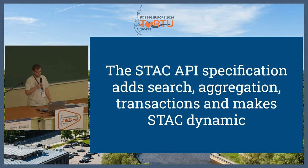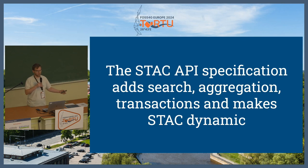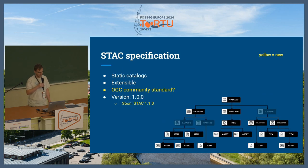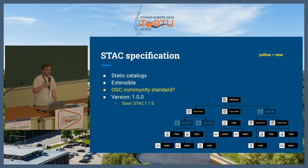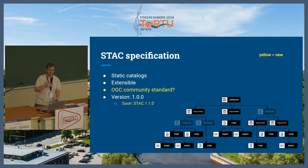The STAC API specification adds dynamic elements to these static catalogs that you can deploy on cloud buckets. It adds, for example, search, aggregation, transactions — everything that makes it dynamic in the end. The specification is extensible; both parts are extensible and there are various extensions that you can reuse. Both specifications have also been submitted as an OGC community standard.